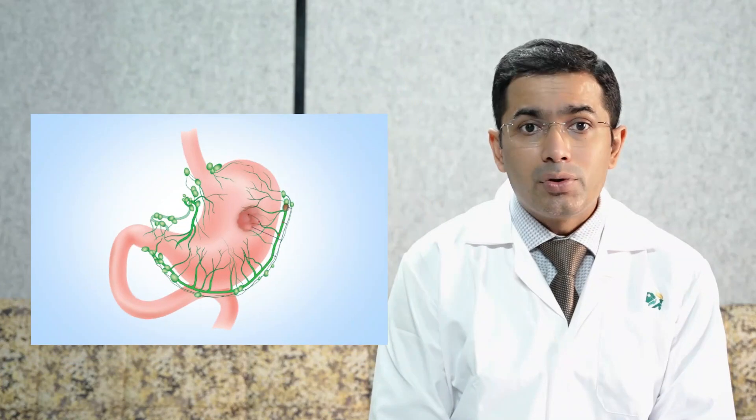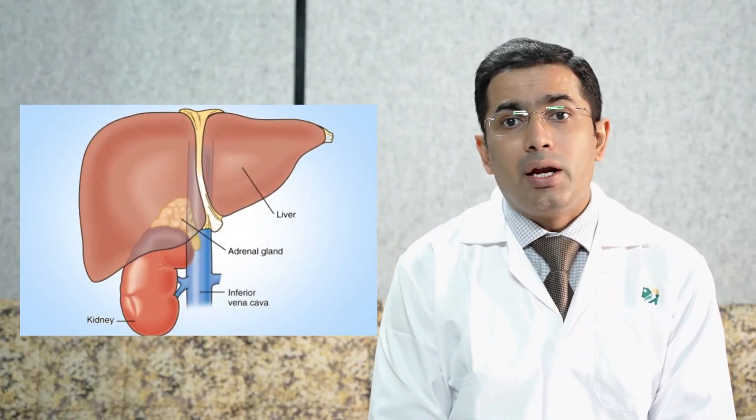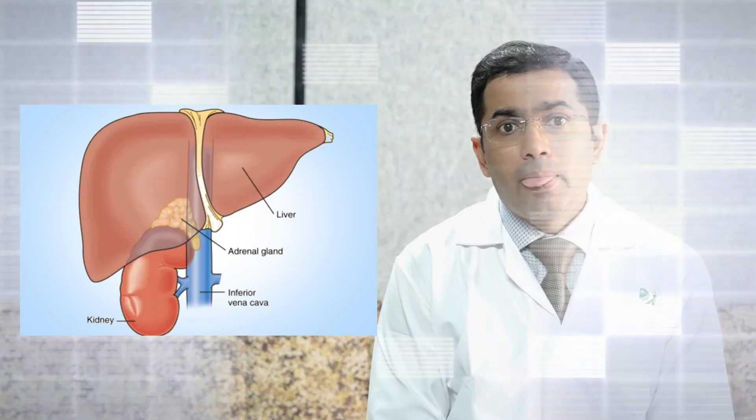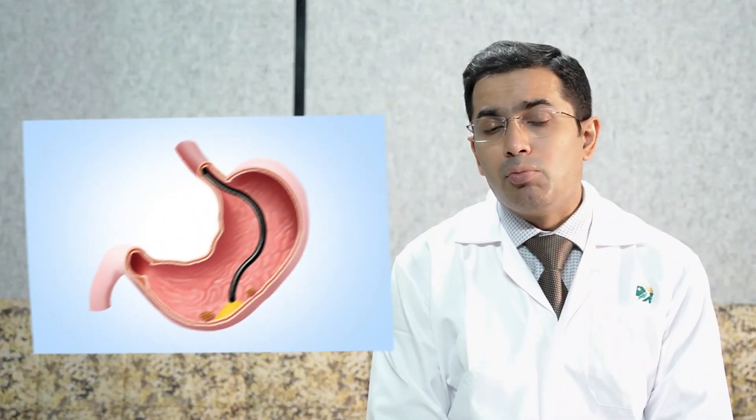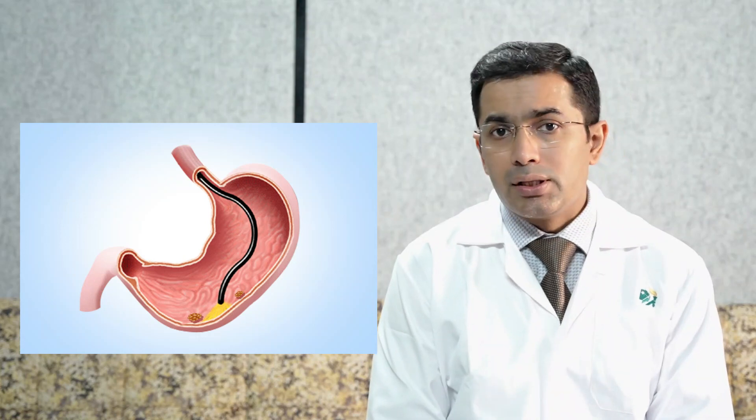It also shows spread to nearby lymph nodes, tissues, and organs such as the liver or the adrenal glands. Endoscopic ultrasound is usually advised when doctors are planning endoscopic removal of a small tumor within the stomach.